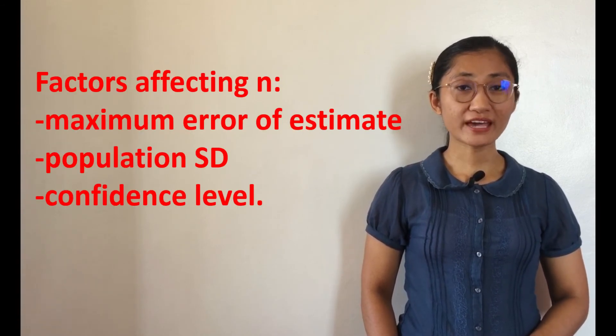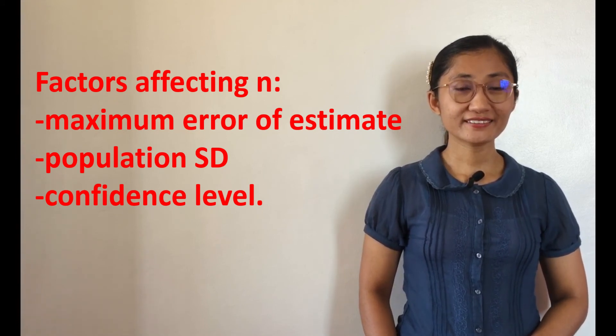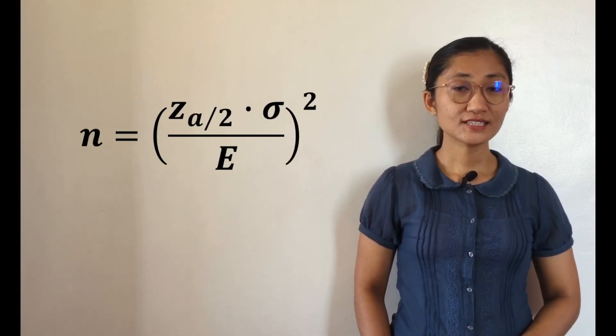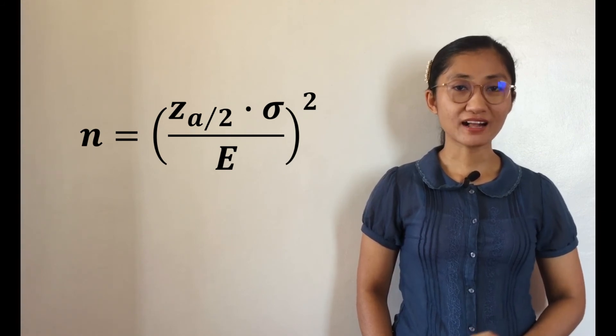If we would like to make an accurate estimate of a parameter, it is necessary to identify the appropriate sample size. Factors affecting the sample size are the maximum error of estimate, the population standard deviation, and the confidence level. In computing for the sample size, we use the formula: n equals the square of Z sub alpha over 2 times sigma over E. Note that in determining sample size, we always round off the resulting value to the next whole number.